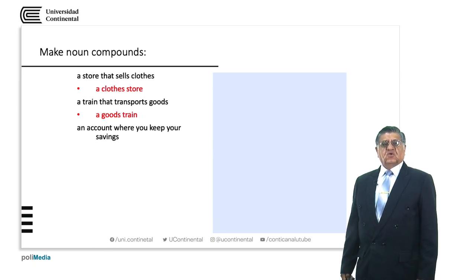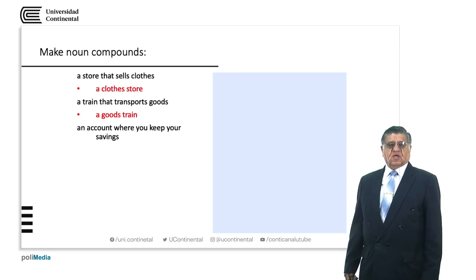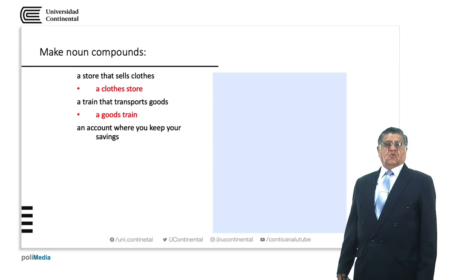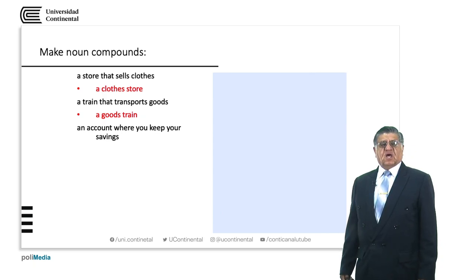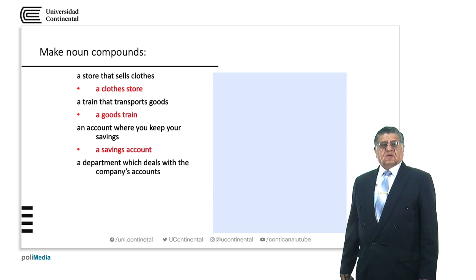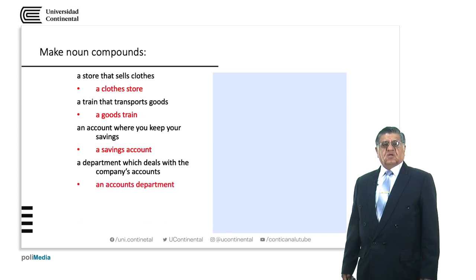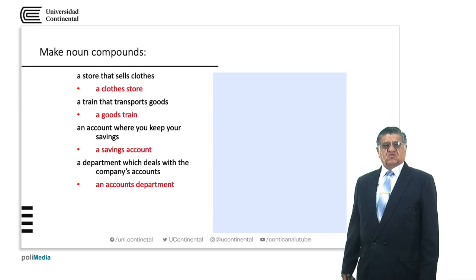An account where you keep your savings — this is very common and obvious. In a financial institution, we have accounts and we put our savings in it: 'a savings account'. A department which deals with the company's accounts — we are talking about a department that specializes in accounts. So, an 'accounts department'.